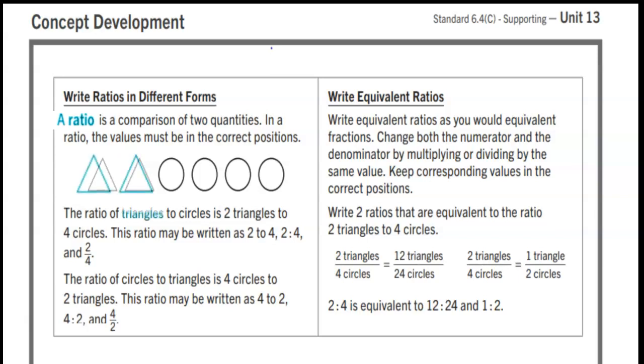The ratio of triangles to circles is two triangles to four circles. This ratio may be written as 2 to 4, 2 colon 4, and 2 over 4.